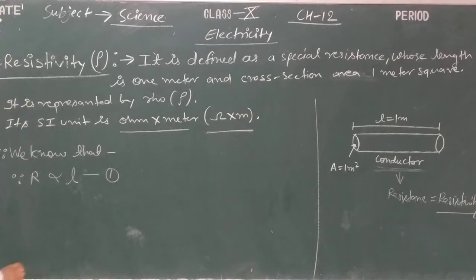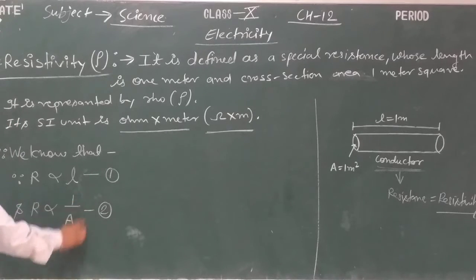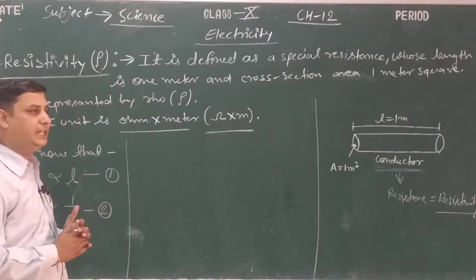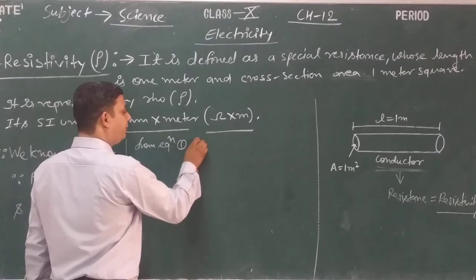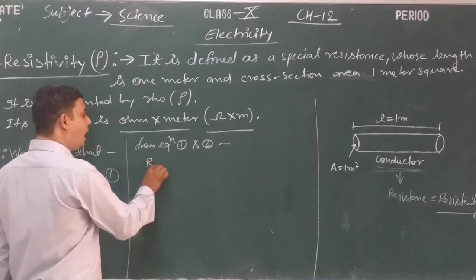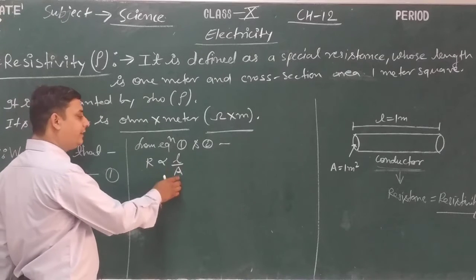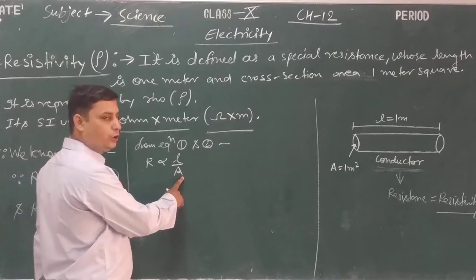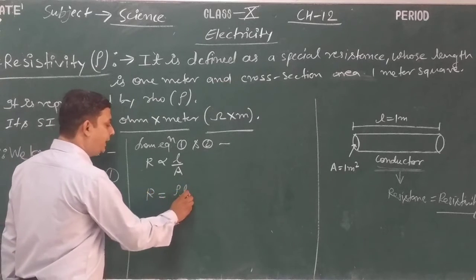We also know that R is proportional to 1 upon A — meaning resistance is inversely proportional to the cross-section area of the conductor. By using these two equations, we form a combined relation. From equation one and two, we can write: R is proportional to L upon A. By removing the sign of proportionality, we write R is equal to rho into L upon A.